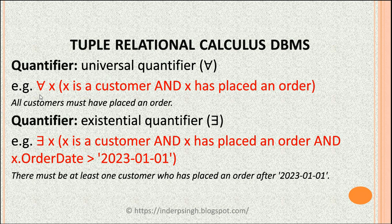An example of the universal quantifier: 'for all x such that x is a customer and x has placed an order.' This means that each customer must have placed an order, because the condition applies to every x that is a customer.